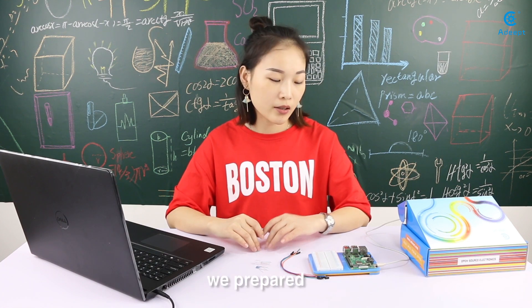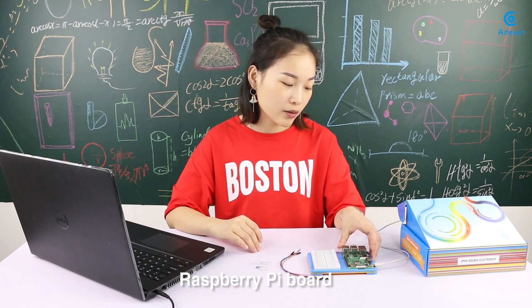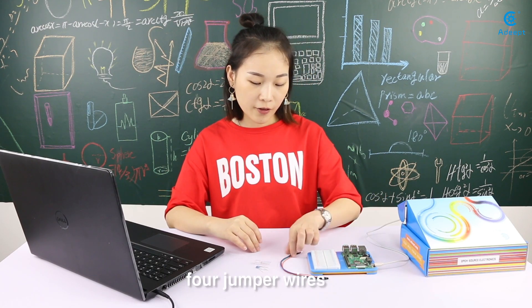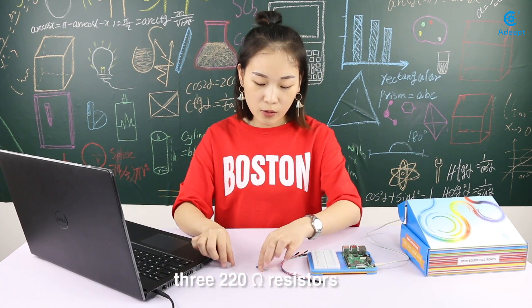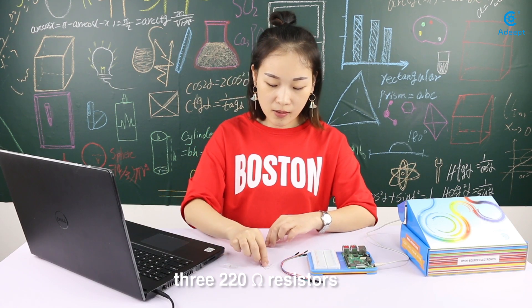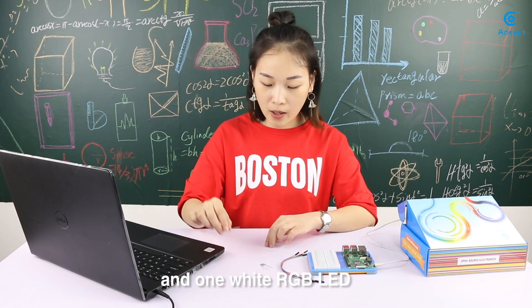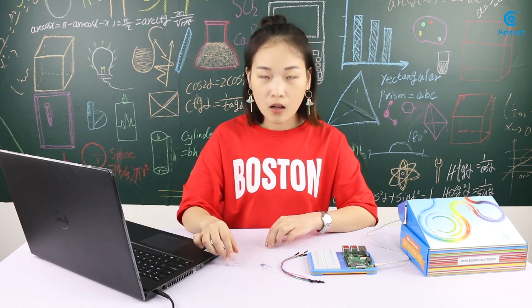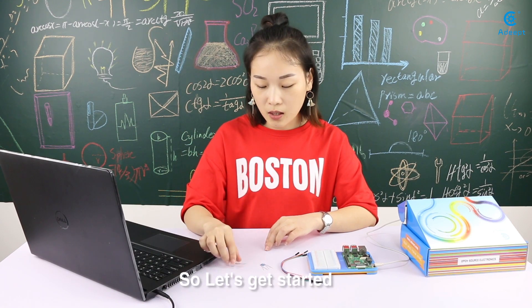Before class, we prepared Raspberry Pi board, power cable, 4 jumper wires, 3 220 ohm resistors, and 1 white RGB LED. So let's get started.